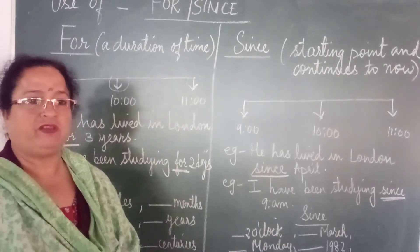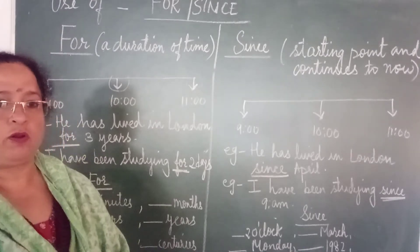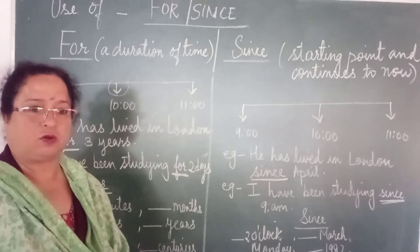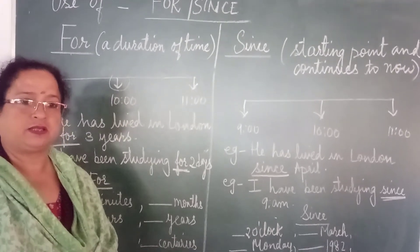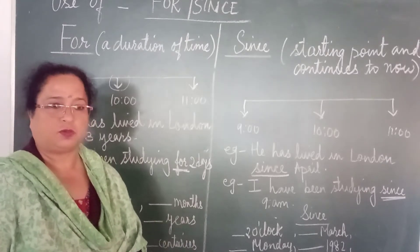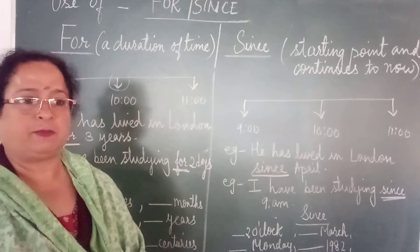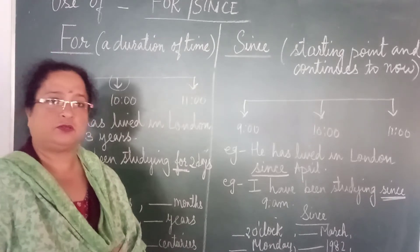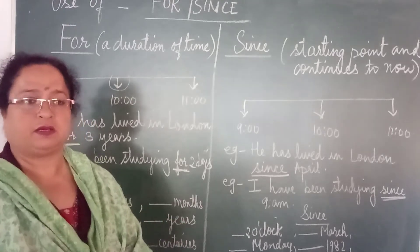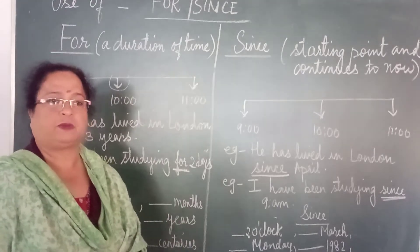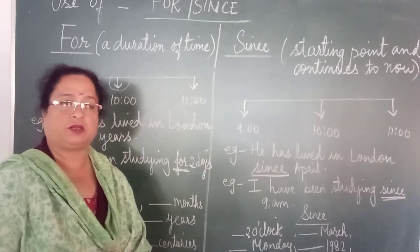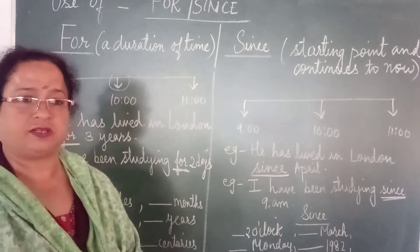'For' is used when we mention a specific period or a duration of time. For example, 'I have been a doctor for 15 years.' In this sentence, 15 years is the duration for how long I have been a doctor. 'She has been a mother for 6 months' — so 6 months is the duration since she has been a mother. 'My sister has lived in Patna for 9 months' — in this sentence, 9 months is the duration of when your sister lived in Patna.